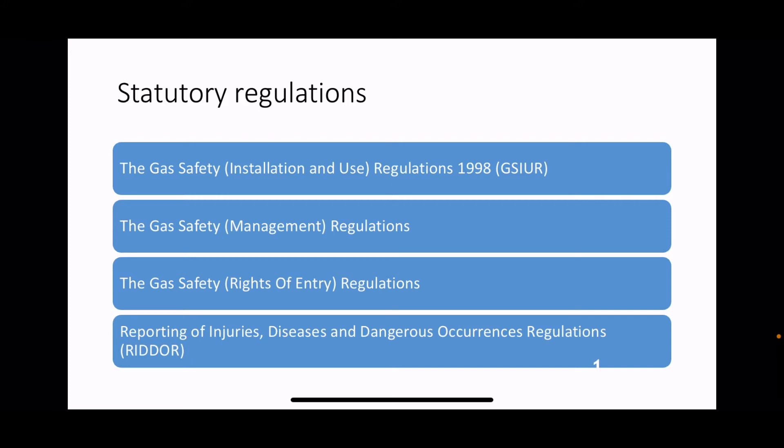The four laws that you work under as a gas engineer are: the Gas Safety Installation and Use Regulations, the Gas Safety Management Regulations, the Gas Safety Rights of Entry Regulations, and RIDDOR - the Reporting of Injuries, Diseases and Dangerous Occurrences Regulations. I'm only going to talk about the first one and the last one, because they're the ones you get asked about on your course and in your tests, and they're the two most important ones for a practical gas engineer.